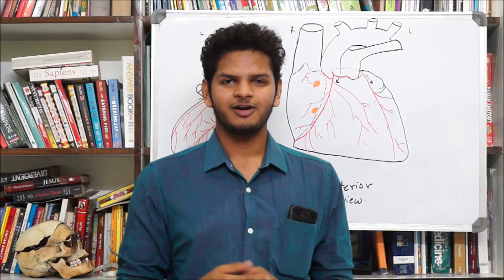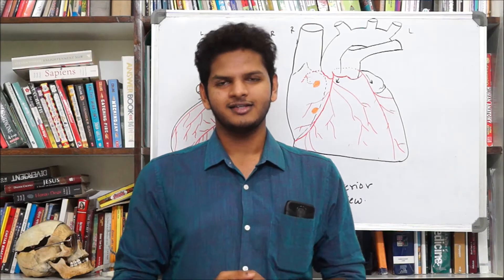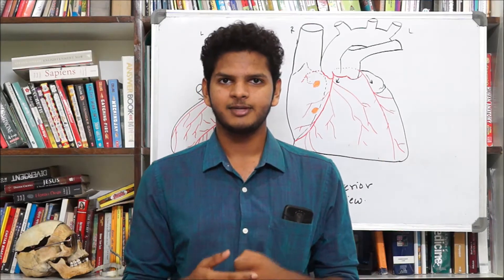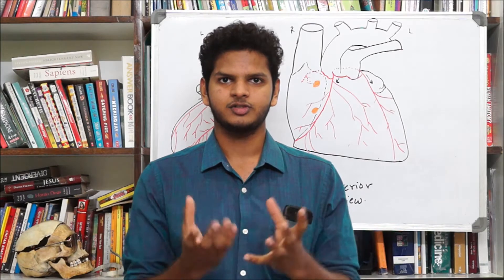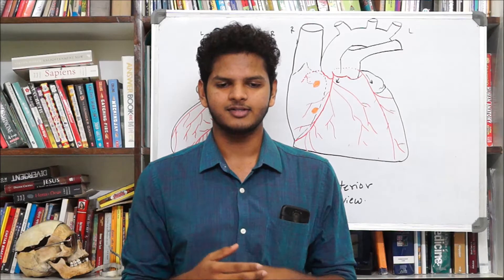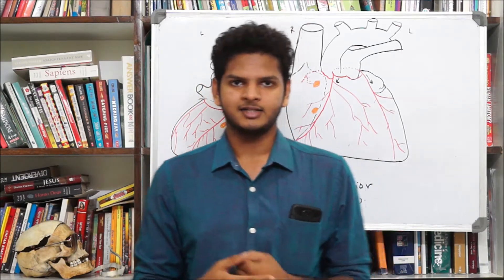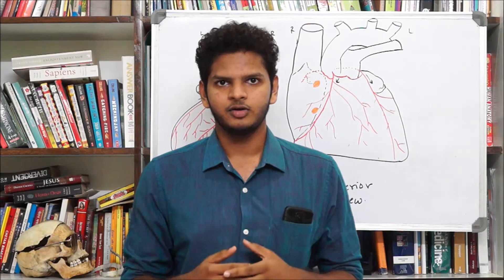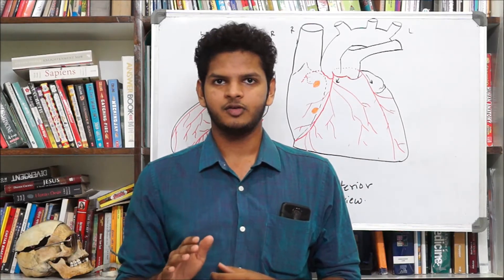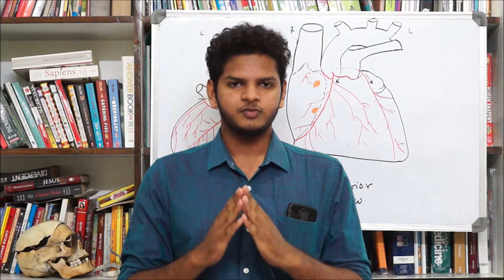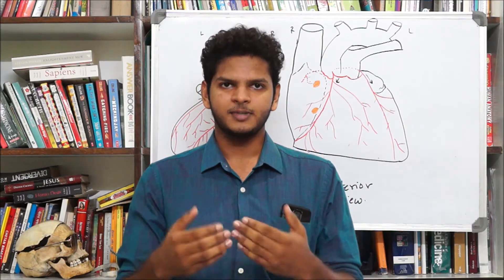Today we're doing a quick topic on coronary arteries. Coronary arteries are basically arteries supplying the heart and related structures — the endocardium, pericardium, and especially the myocardium, since the musculature is the most important part of cardiac muscle. Coronary arteries arise from the ascending aorta — not the arch of aorta, not the descending thoracic or abdominal aorta — and they are the right and left coronary arteries.